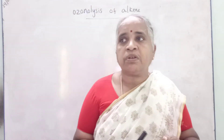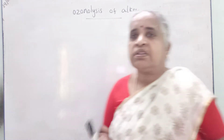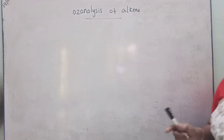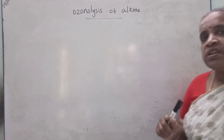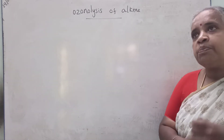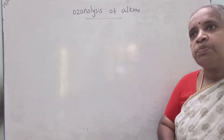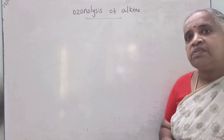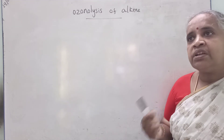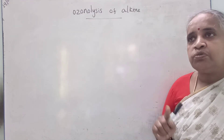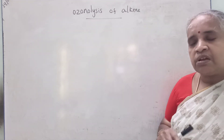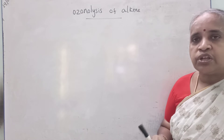Primary alcohols and secondary alcohols — pass the vapors of the primary alcohol over heated copper at 573 Kelvin, we will get the aldehyde. If you pass the secondary alcohol over copper at 573 Kelvin, we will get the ketone. This is one method of preparation of aldehydes and ketones.